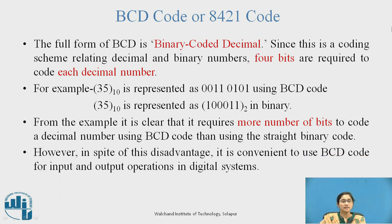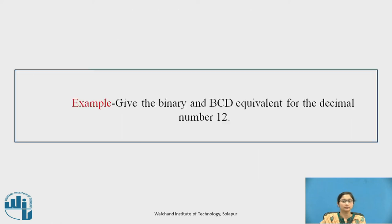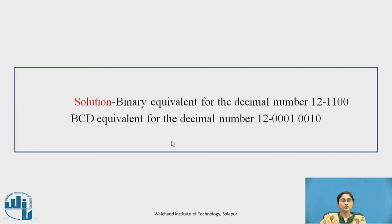Example: Give the binary and BCD equivalent for the decimal number 12. Solution: The binary equivalent of decimal 12 is 1100. The BCD equivalent of decimal 12 is 8 bits: for 1, the representation is 0001, and for 2, the representation is 0010.